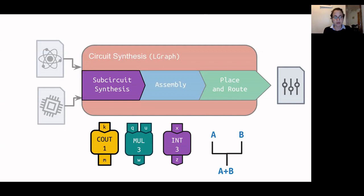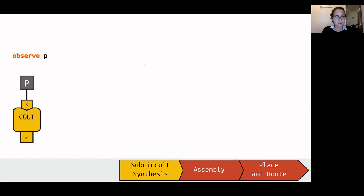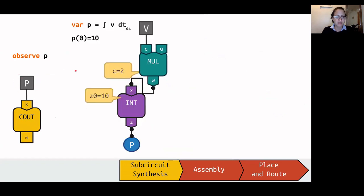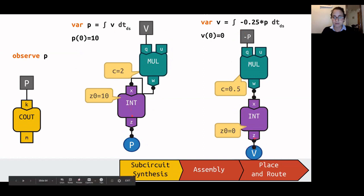Subcircuit synthesis takes all blocks that perform computation and, using Kirchhoff's law if necessary, composes them to implement each of the relations in the dynamical system. For example, for the harmonic oscillator relations, the subcircuit synthesis stage produces three subcircuits: one modeling the observed P statement with a CL block, one modeling position over time with a multiplier and integrator where the integrator output provides position and velocity is provided at port P, and one modeling velocity over time with an integrator and multiplier requiring negated position at input port Q and emitting velocity V from the integrator.